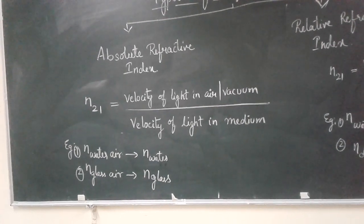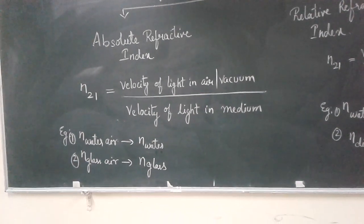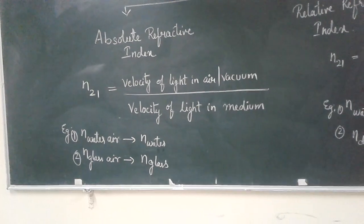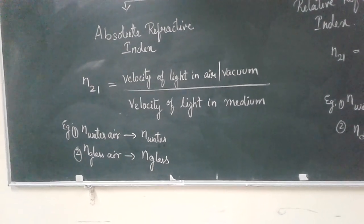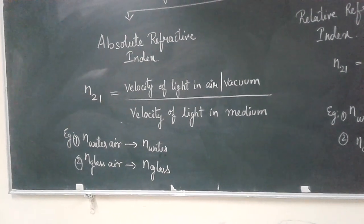For example, refractive index of water with respect to air can be simply set as refractive index of water, or refractive index of glass with respect to air can be set as refractive index of glass. This is known as absolute refractive index.